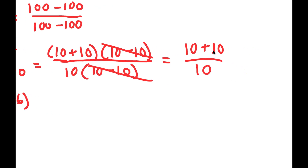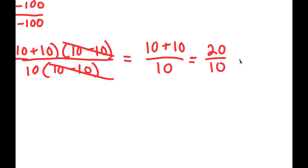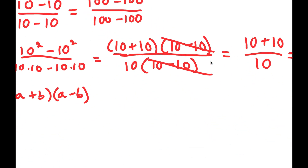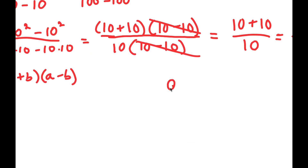And now, 10 plus 10 is equal to 20, so I get 20 over 10. And 20 divided by 10 is equal to 2. So there you have it — I just proved that 0 over 0 is equal to 2.